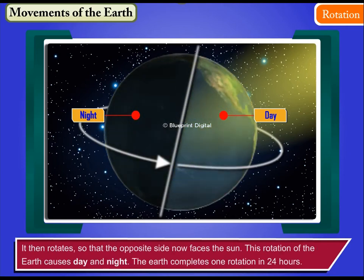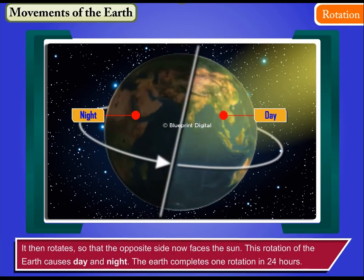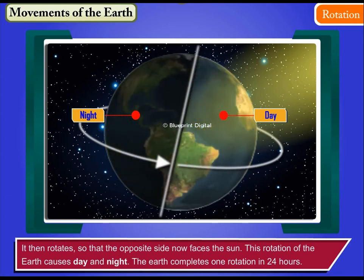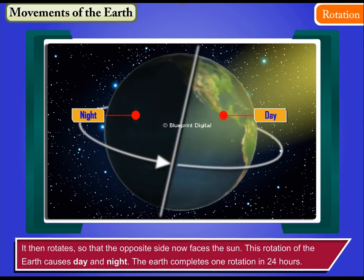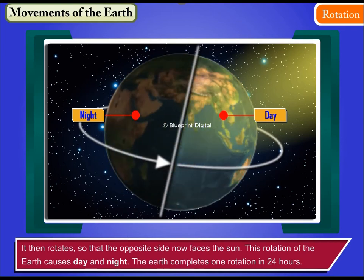It then rotates so that the opposite side now faces the Sun. This rotation of the Earth causes day and night. The Earth completes one rotation in 24 hours.